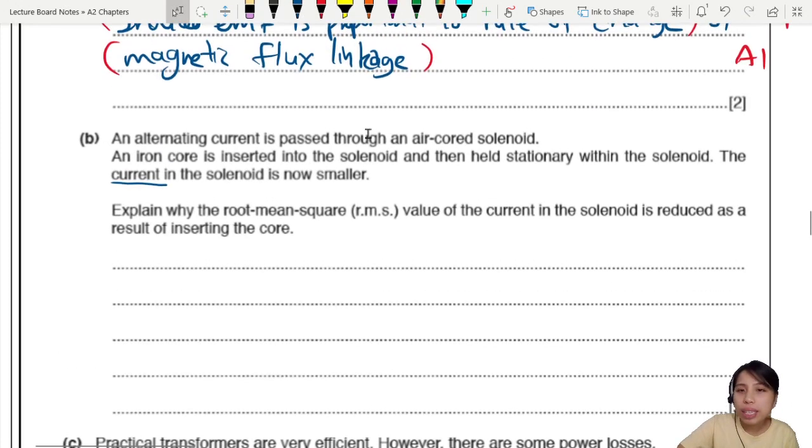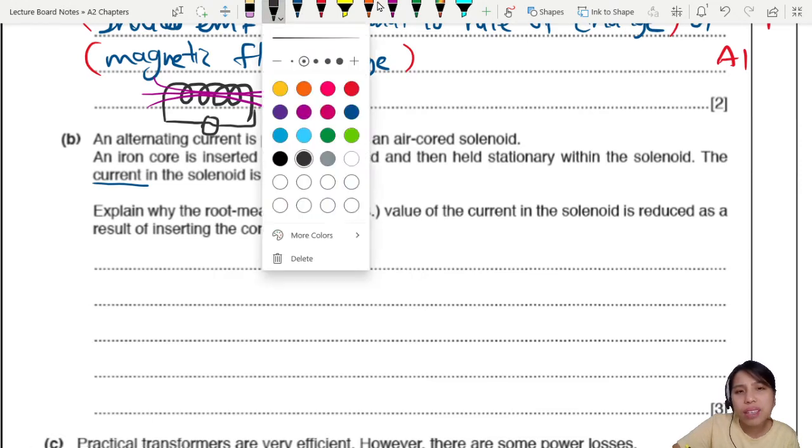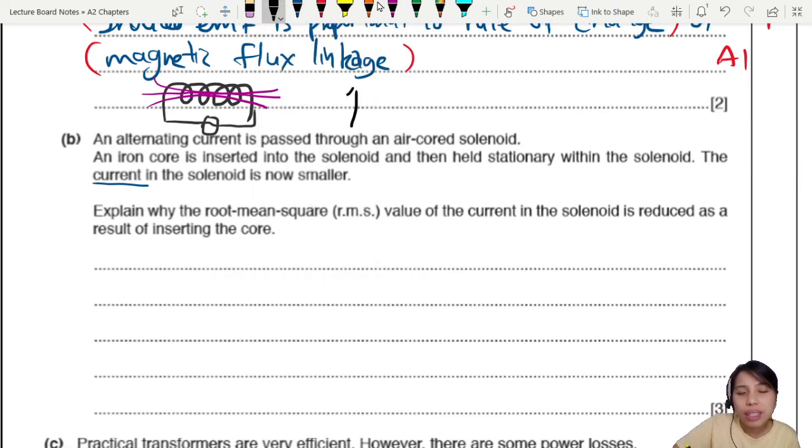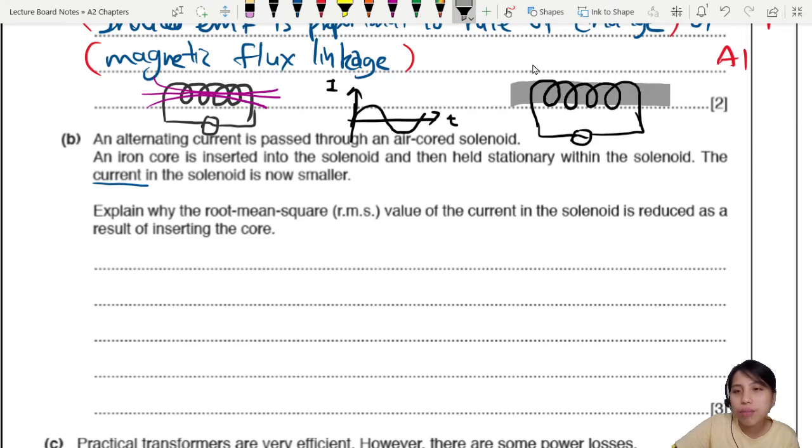Before you do anything, there's a solenoid. It's just air-core. No core. It's just a metal. And you have a magnetic flux that is changing back and forth because you are connected to an AC supply. So if you want to draw a graph, it kind of looks something like this.